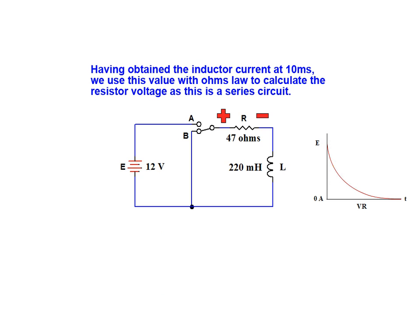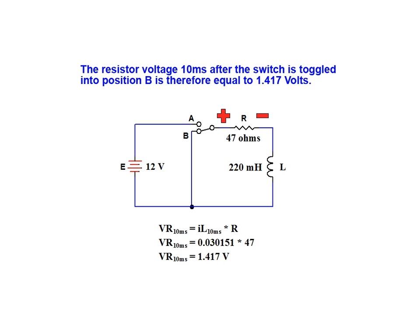Having obtained the inductor current at 10 milliseconds, we can use this value with Ohm's law to calculate the resistor voltage at that time. As can be seen from the results of this calculation, the resistor voltage 10 milliseconds after the switch is toggled into position B is equal to 1.417 volts.